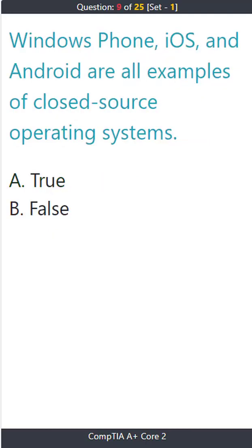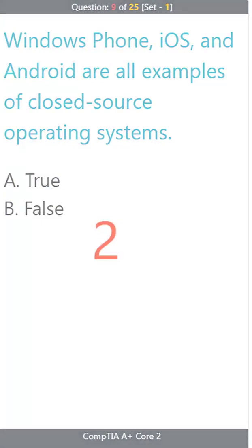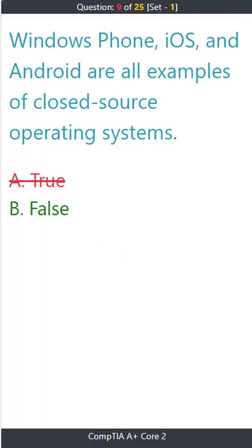Question 9: Windows Phone, iOS, and Android are all examples of closed source operating systems. A) True. B) False. The correct answer is B: False.